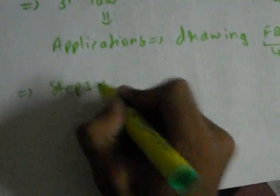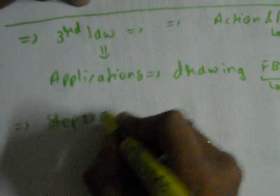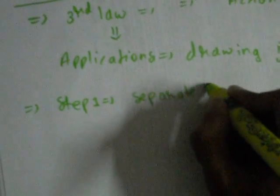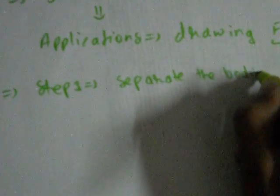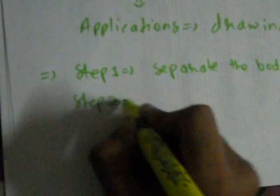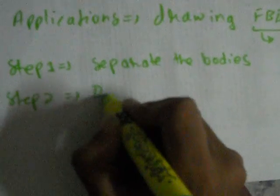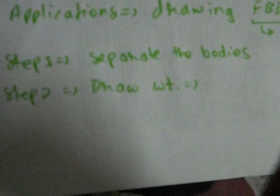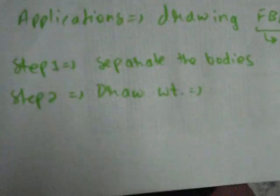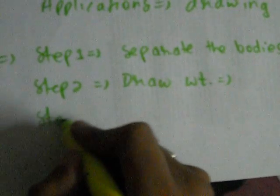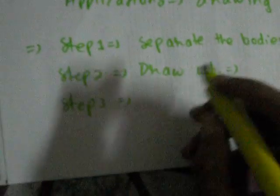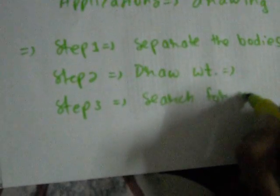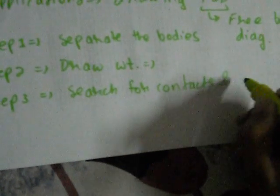There are some steps to draw a free body diagram, which is step one: separate the bodies. Step two: draw weight, which is mg, mass times the gravitational acceleration, which is always towards the center of earth. Third step: search for all contacts and contact forces.